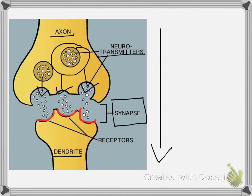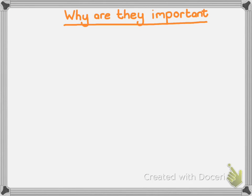That information will then be converted from a chemical message back into an electrochemical message that will move through the dendrite. Please note that you don't need very detailed knowledge of how the chemical reactions take place across the synapse or the formation of the vesicles. As per the exam guideline, there is only one bullet point to focus on, which is the significance of synapses.